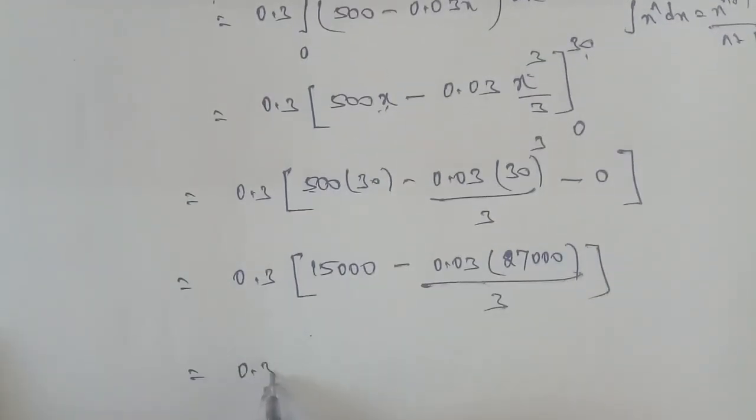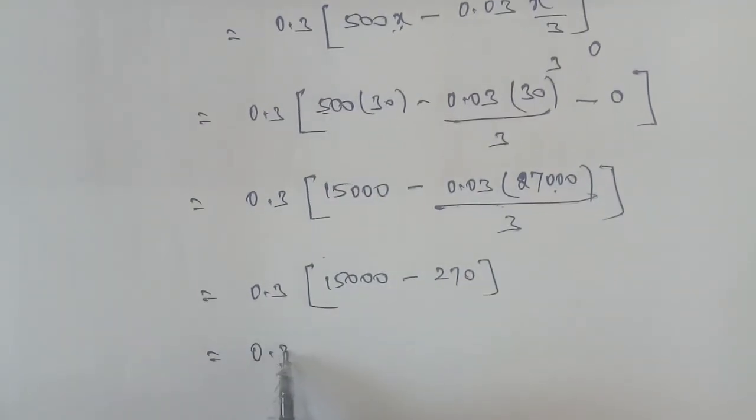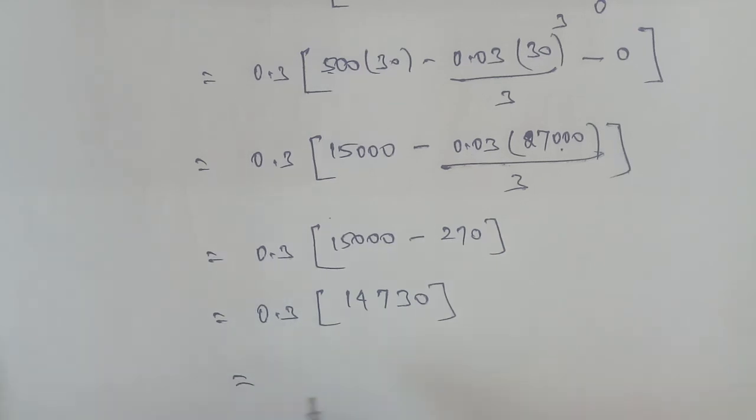Calculating, 0.3 × [15000 - 0.03 × (27000)/3], which gives 0.3 × [15000 - 270]. This equals rupees 4419.